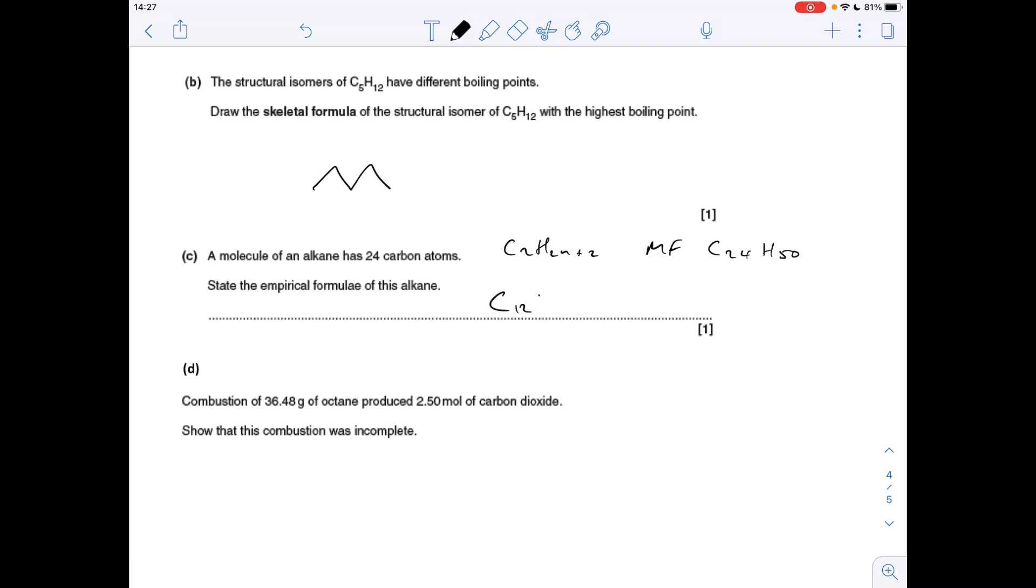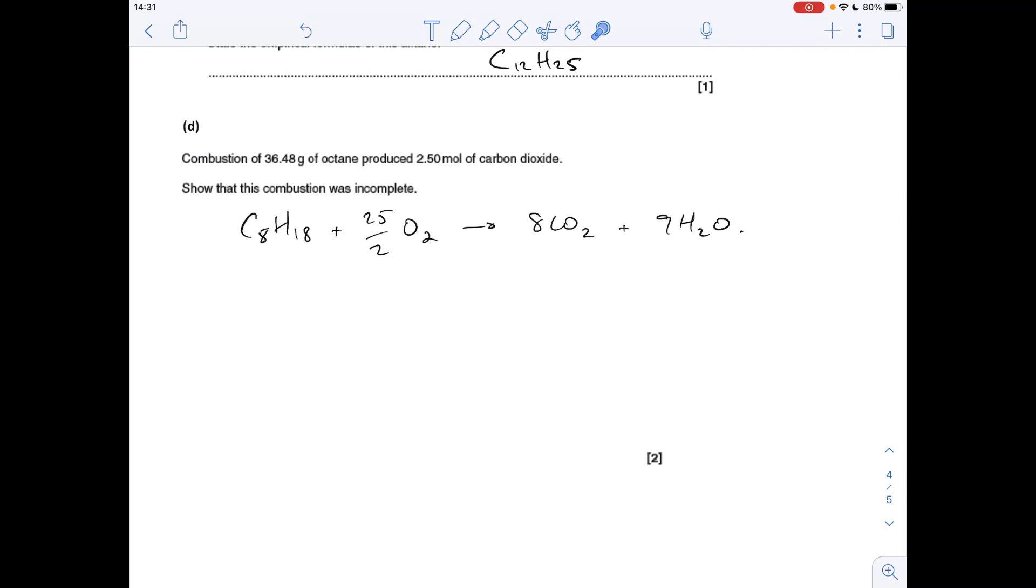The final question: we've got to use the information given to show that the combustion of octane was incomplete. There's the complete combustion reaction equation. Basically, one mole of octane should make eight moles of CO2. So if we work out how many moles of octane that is and then compare it - find out how many eight times that is - then if 2.5 is less, it's incomplete.